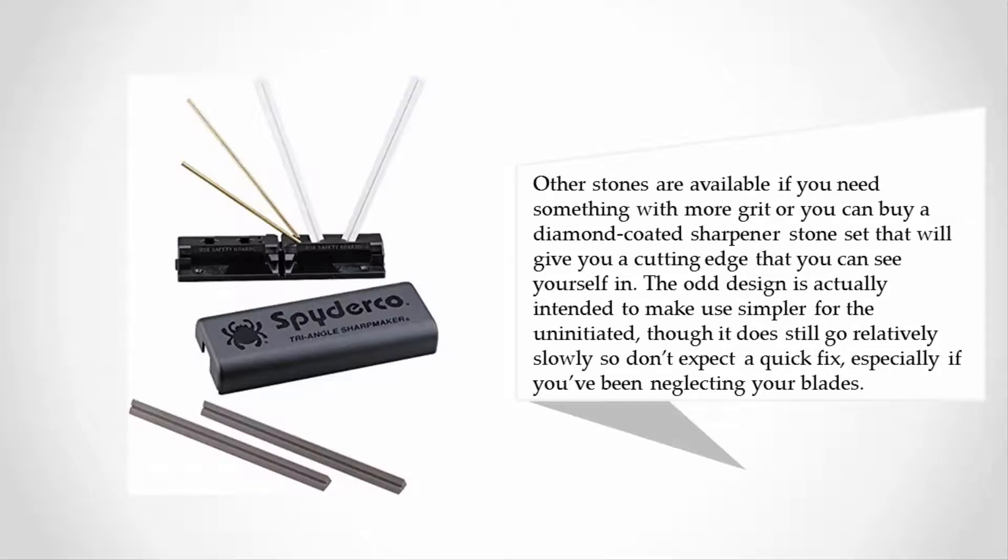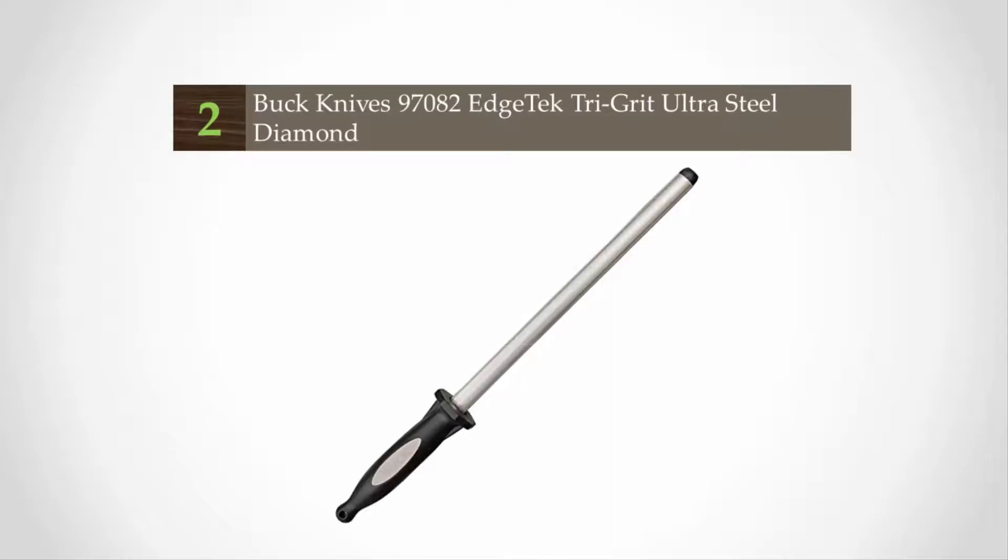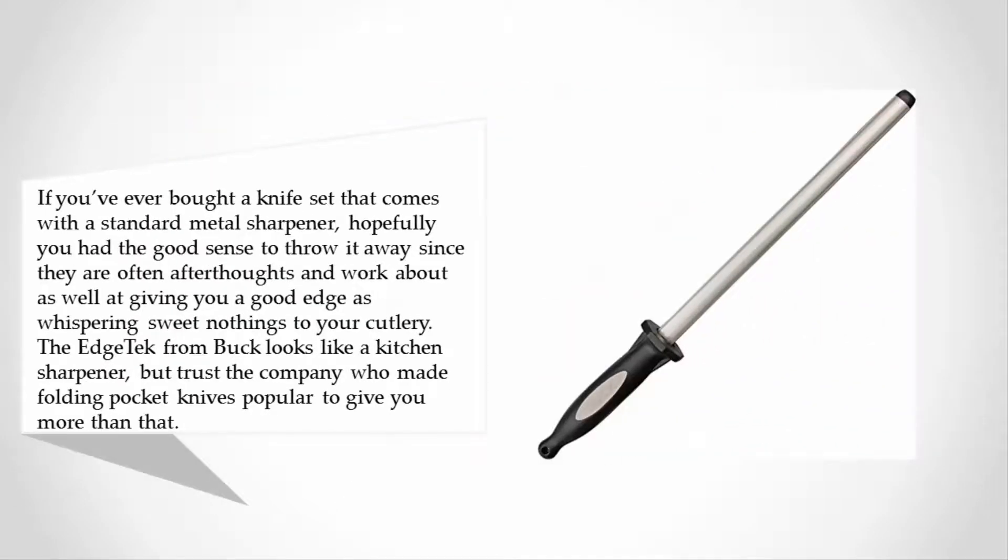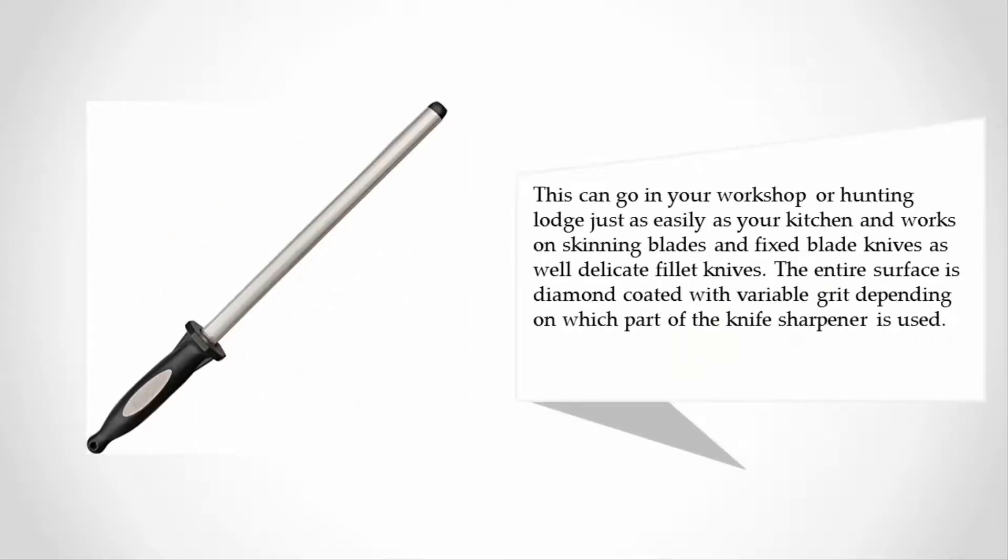At number two, if you've ever bought a knife set that comes with a standard metal sharpener, hopefully you had the good sense to throw it away since they are often afterthoughts and work about as well at giving you a good edge as whispering sweet nothings to your cutlery. The EdgeTek from Buck looks like a kitchen sharpener, but trust the company who made folding pocket knives popular to give you more than that. This can go in your workshop or hunting lodge just as easily as your kitchen.